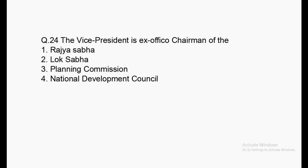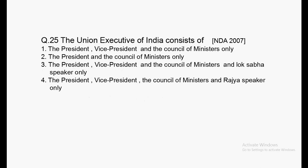Next question: The Vice President is ex-officio chairman of which body? Options: Rajya Sabha, Lok Sabha, Planning Commission, National Development Council. Answer: Option 1 is correct — Rajya Sabha. The Vice President is the ex-officio chairman of the Rajya Sabha.